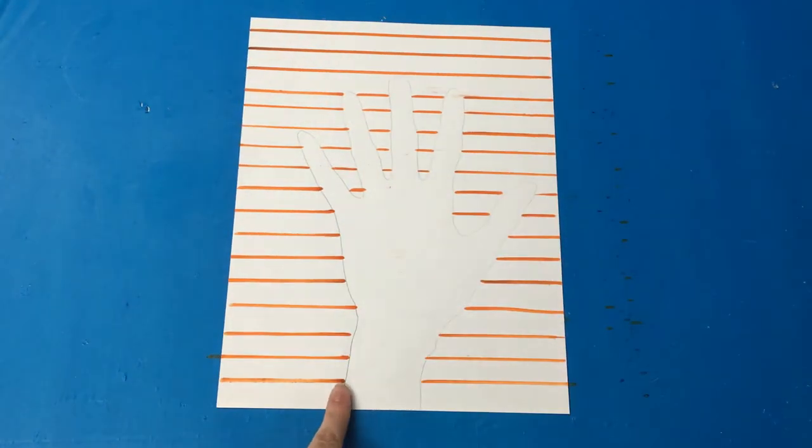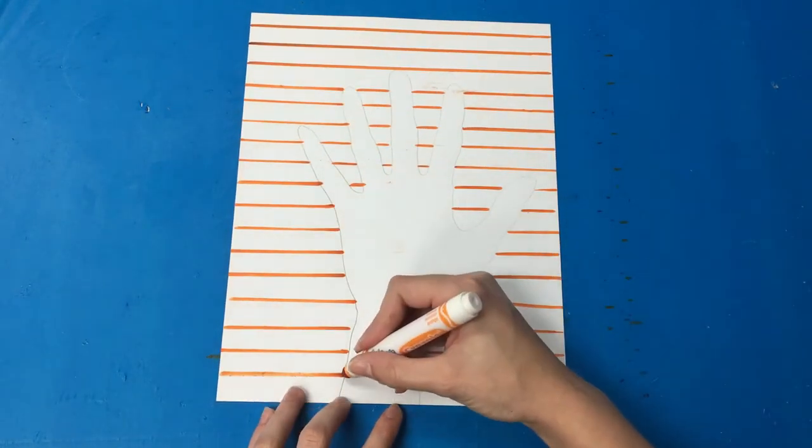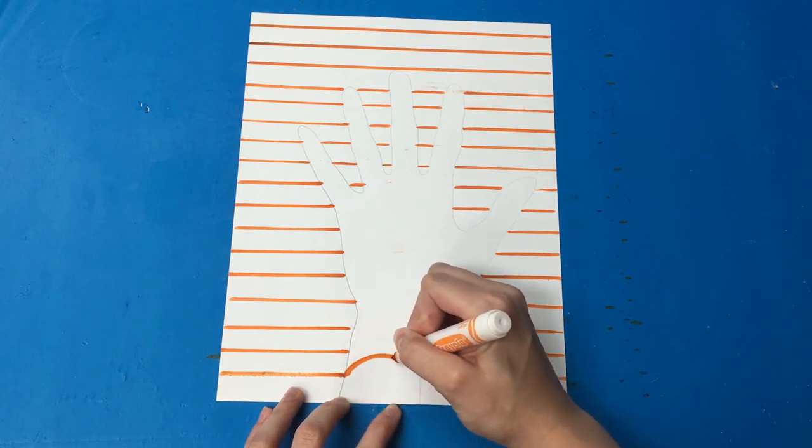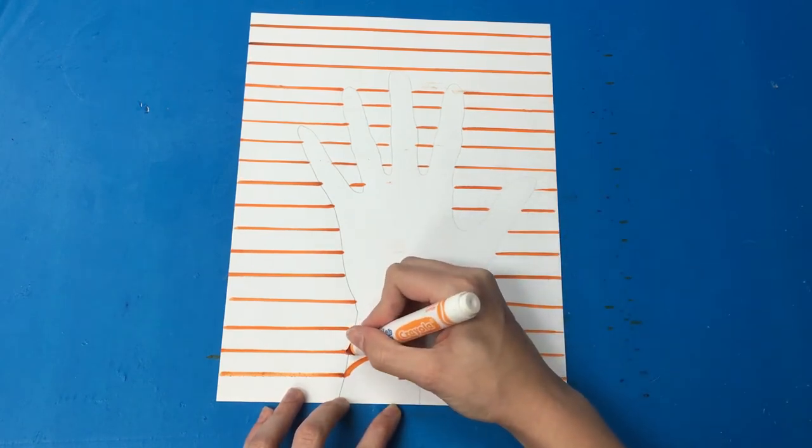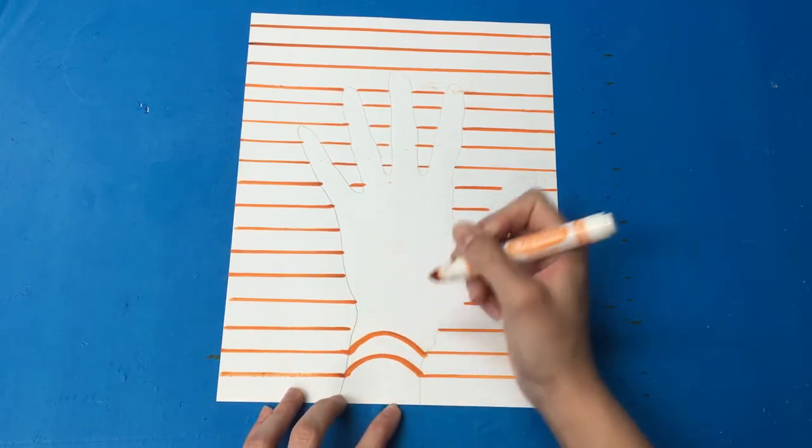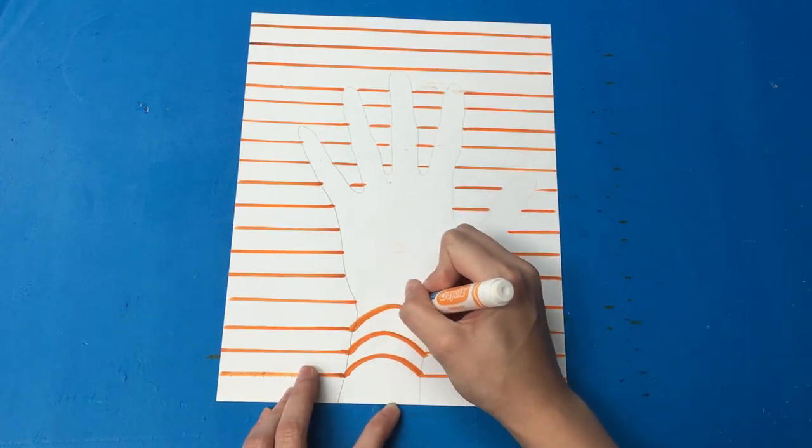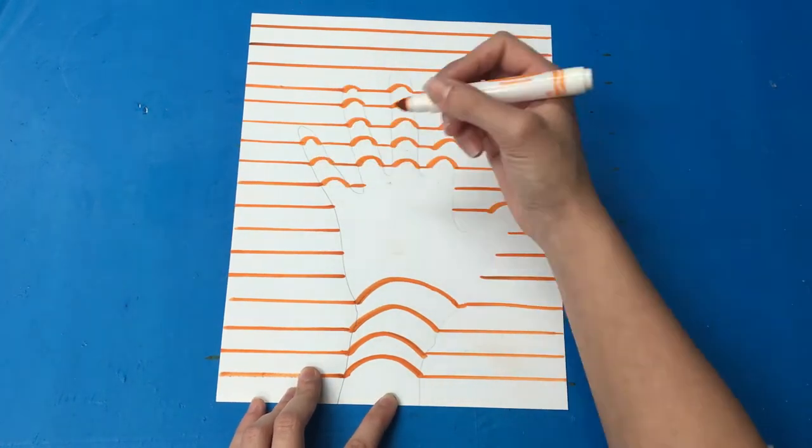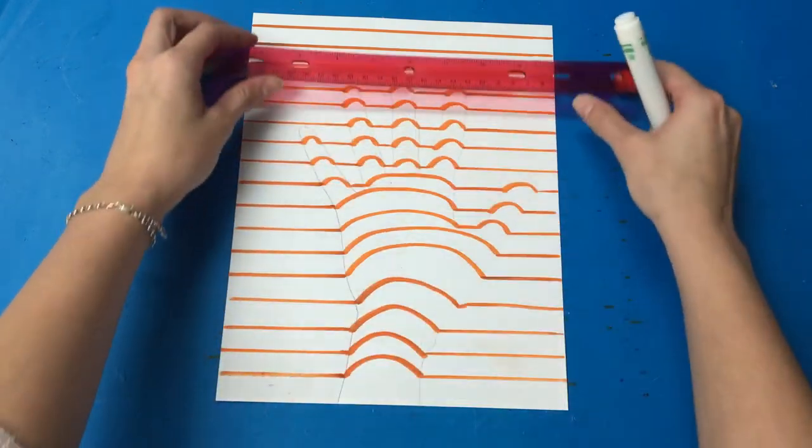Once you are done with your straight lines in the background, you are going to make curved lines connecting your straight lines as shown. This means your entire hand will be filled with curved lines.